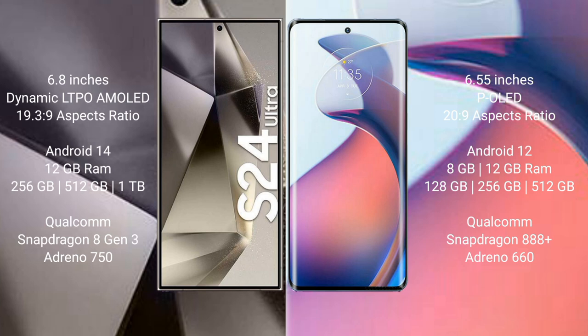Samsung Galaxy S24 Ultra runs on Android 14. Motorola Moto S30 Pro runs on Android 12. Samsung Galaxy S24 Ultra comes with 12GB RAM and 256GB, 512GB, or 1TB internal storage, with a Qualcomm Snapdragon 8 Gen 3 processor and Adreno 750 GPU. Motorola Moto S30 Pro comes with 8GB or 12GB RAM.